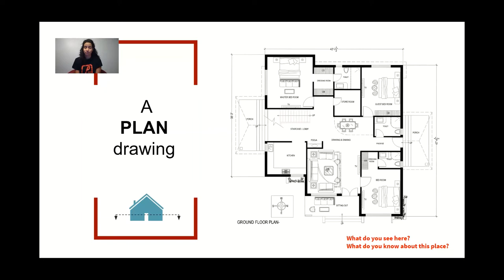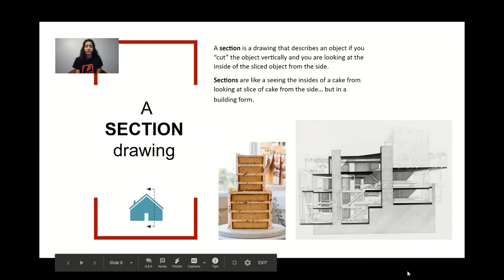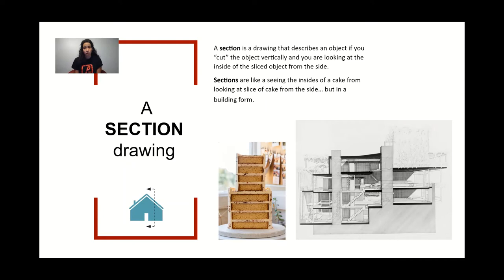What else do you know about this place? The next is a section drawing. A section is a drawing that describes an object if you cut the object vertically, and then you're looking at the inside of the sliced object from the side. For example, sections are like seeing the insides of a cake once you slice through, but it's in a building form.